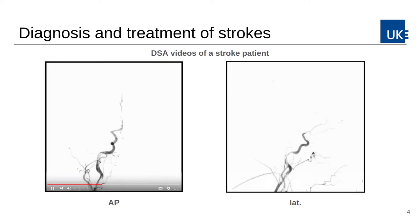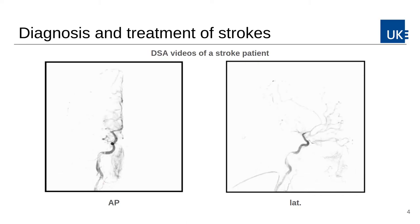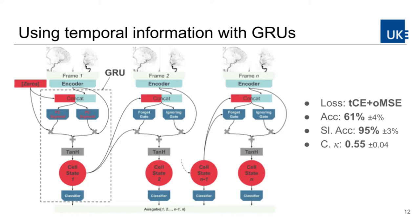It is based on a digital subtraction angiography time series, which is recorded during the procedure. The main problems with the TIKI score are the high inter- and intra-rater observer variability.